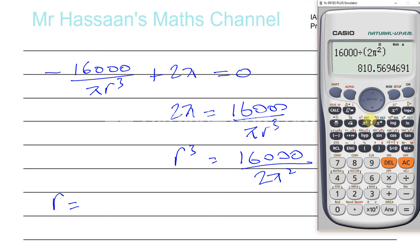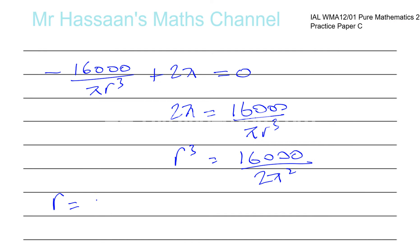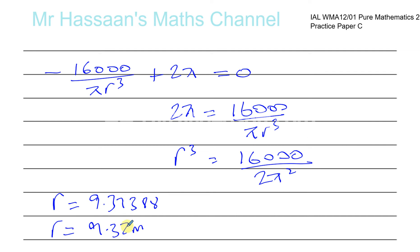Taking the cube root of 810.569 gives R ≈ 9.3238. An appropriate degree of accuracy for the radius would be 3 significant figures, so R ≈ 9.32 cm.